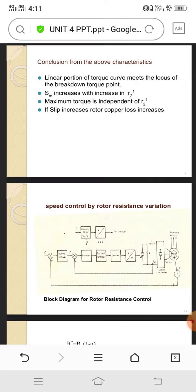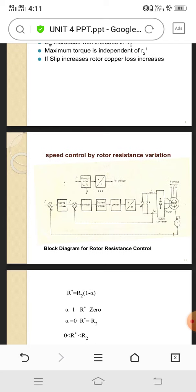Then the third one is speed control by rotor resistance variations. This speed control always separates their limits for controlling purposes across the induction motor.